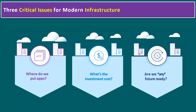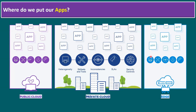Any infrastructure — whether on-premises, edge location, or cloud location — needs to be addressed. Where we put our applications comes down to either public cloud, private cloud, or edge locations. Even in private cloud, we have to meet certain SLEs and maintain the security controls.